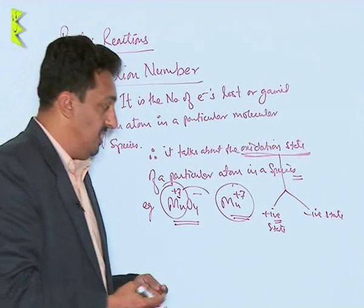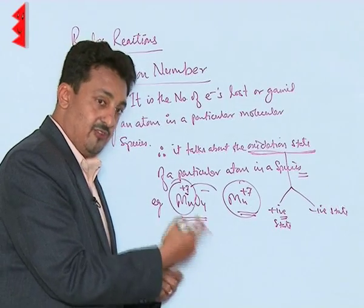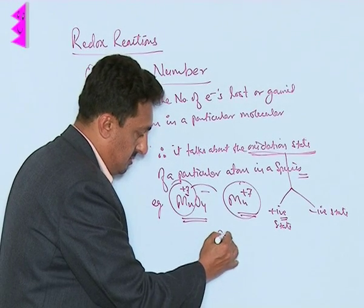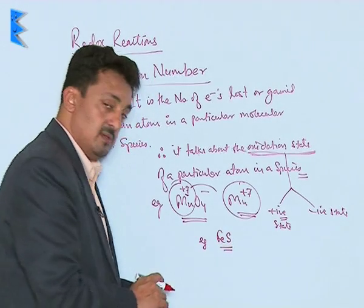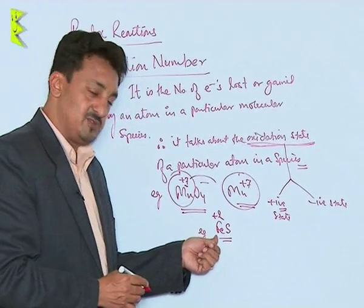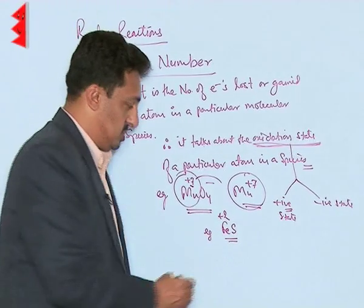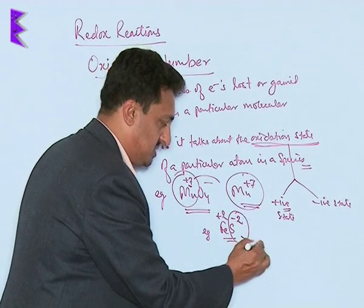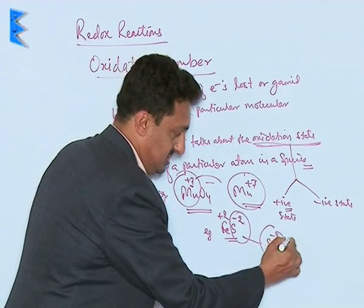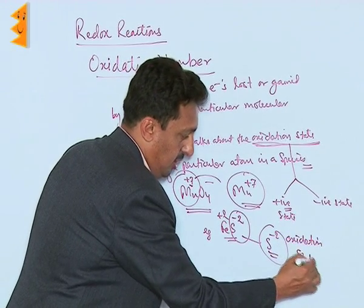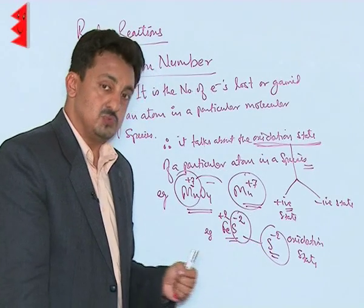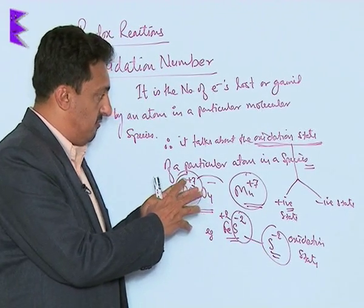Some species gain electrons and they become negative. We can also find out how many electrons they have actually acquired. For example, FeS — ferrous sulfide. When we say ferrous, it means the iron is in its plus two state, which means it has lost two electrons to the sulfur. So sulfur is present in its minus two state, accepting two electrons from iron. This minus two state is called its oxidation state, and the number of electrons it is acquiring is two, so its oxidation number is two.